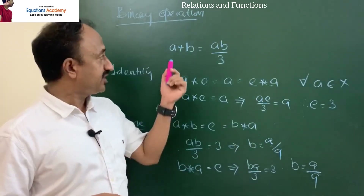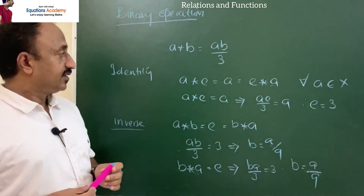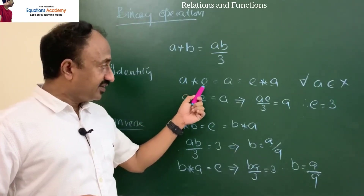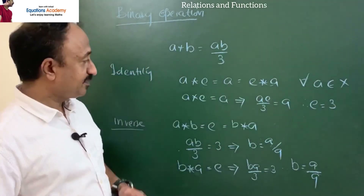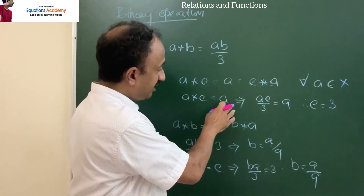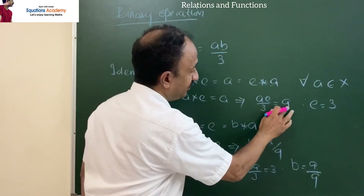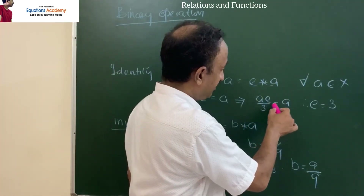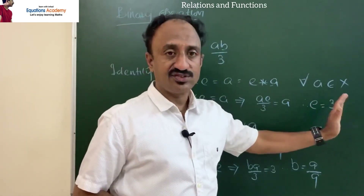Now find the identity element. The condition is a★e = a = e★a. So a★e = ae/3 = a, which gives e/3 = 1, so e = 3. The identity element is 3.